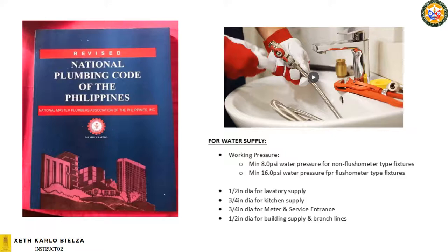But without a flushometer, the minimum required working pressure in the plumbing system or water supply is 8 PSI. The fixture supply line sizes vary — these are the standard sizes. The minimum for a lavatory individual supply is a one-half inch diameter stub-out. For the kitchen supply, for the kitchen sink, that is a three-quarter inch diameter pipe. For the water meter or service entrance, the minimum is also three-quarter inch diameter.